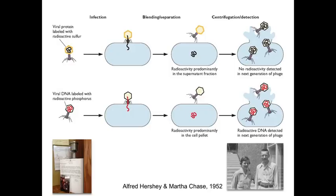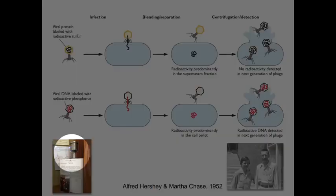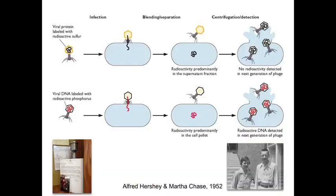Al Hershey and Martha Chase worked at Cold Spring Harbor on Long Island. They did this very famous experiment using a common kitchen blender. They wanted to know, if you take a bacteriophage, which part is the genetic information that specifies the production of more viruses — is it the protein shell or is it the nucleic acid? So they would grow phages with radioactive precursors to protein or radioactive precursors to the DNA.